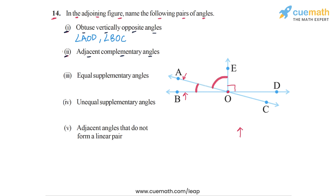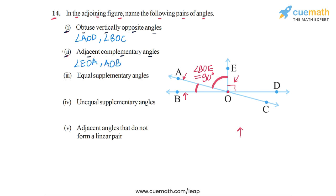This works because OE is perpendicular to BOD, as we observed at the beginning. So two adjacent complementary angles in this figure are angle AOE (or EOA) and angle AOB. This is the answer for part two.